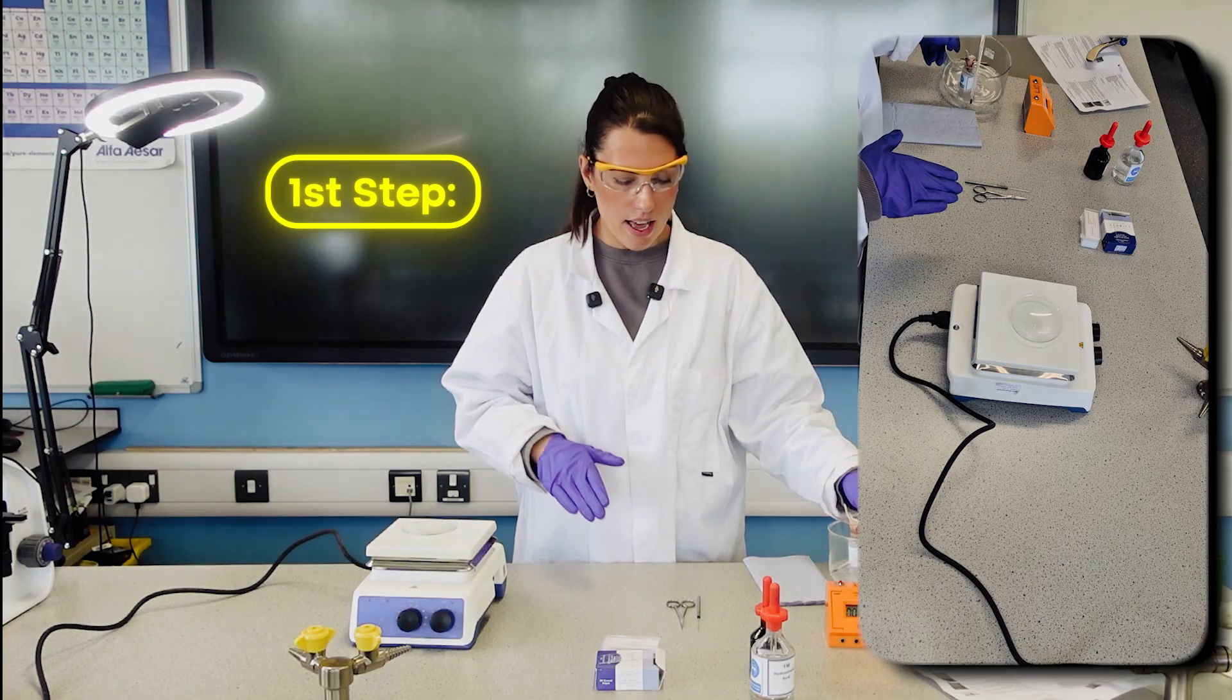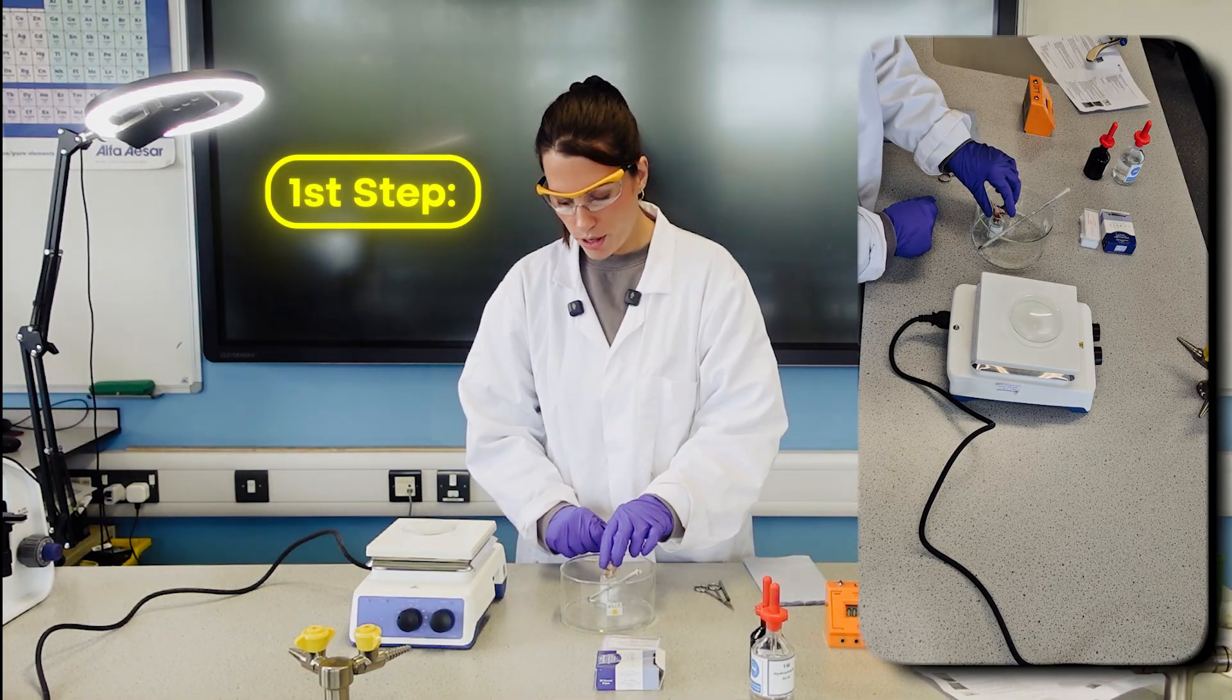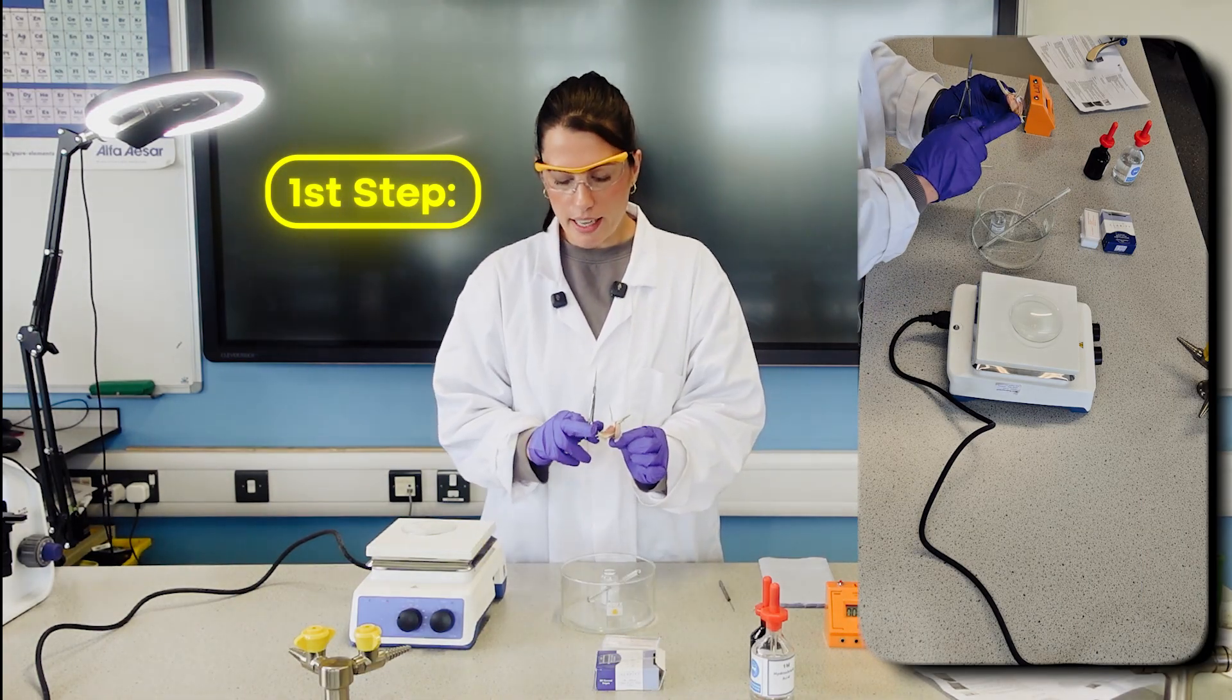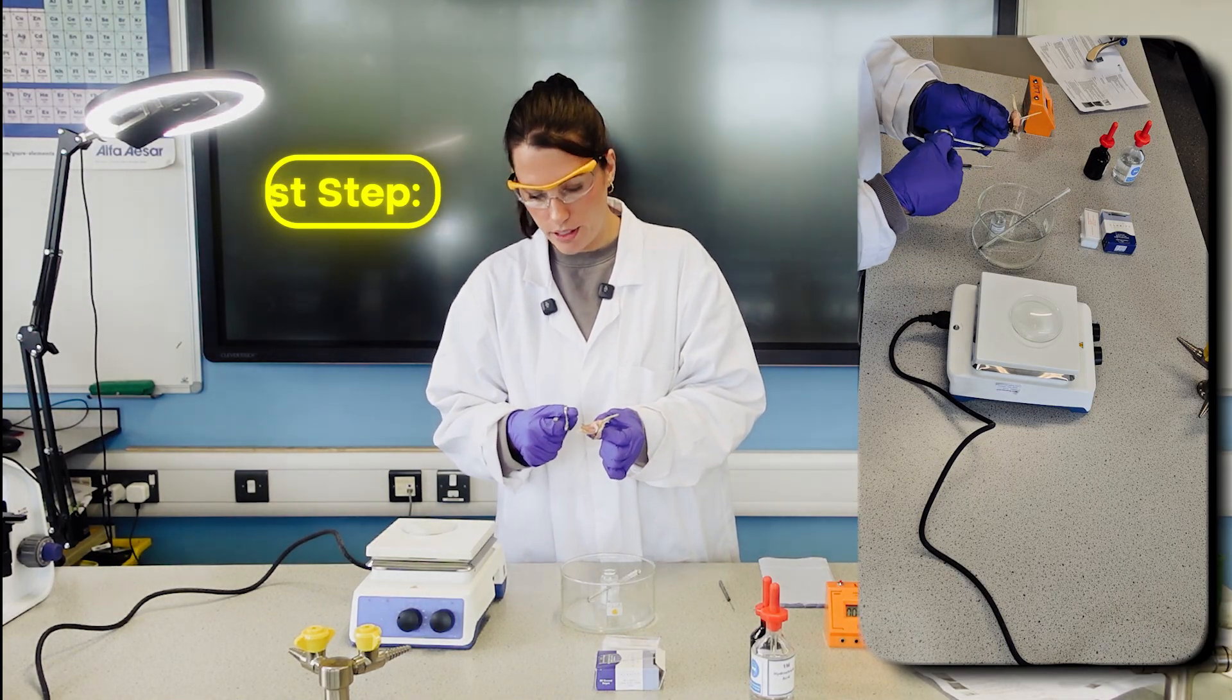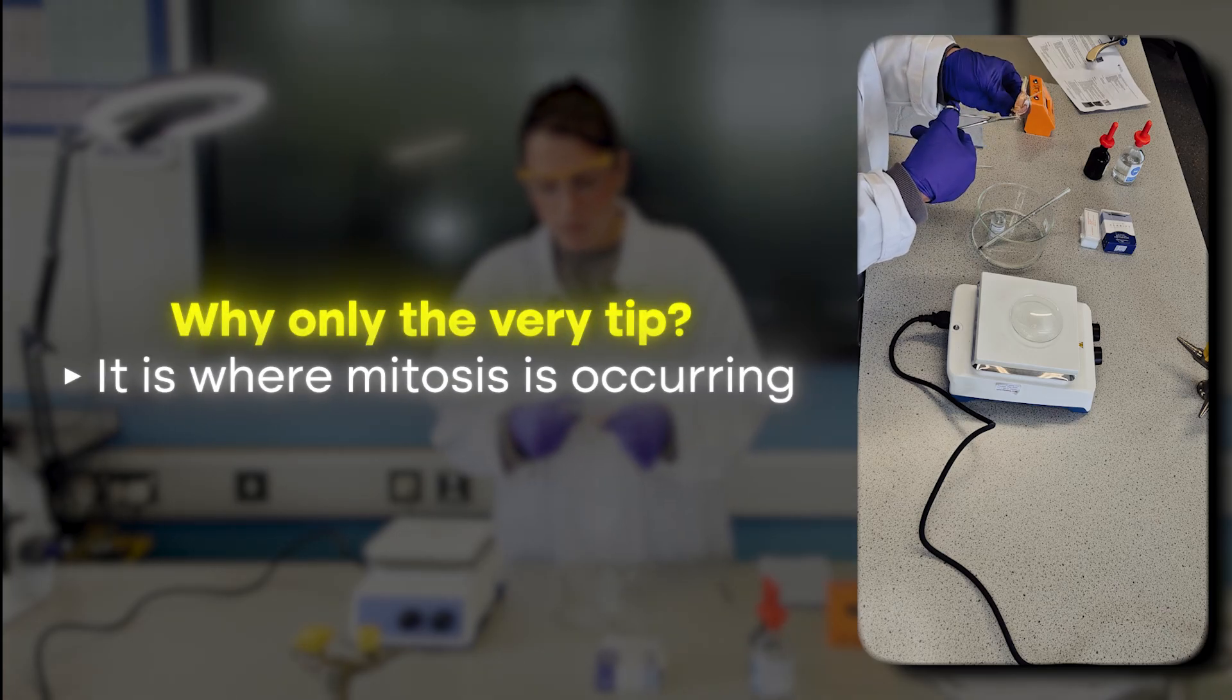The first step I've actually already done and got set up. But just to go through what you'd need to do, I've got the garlic and using my sharp scissors, I cut off just the very, very tip of that root, about three millimeters from the end.